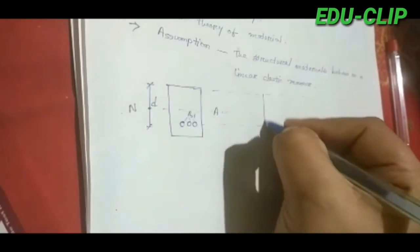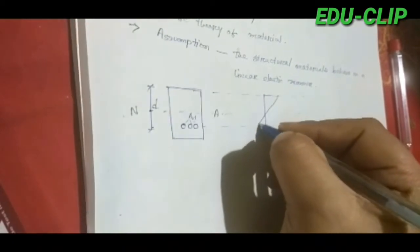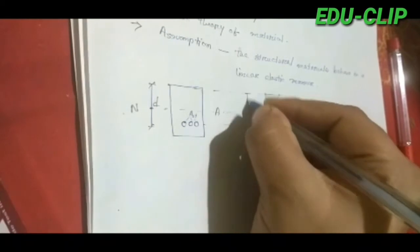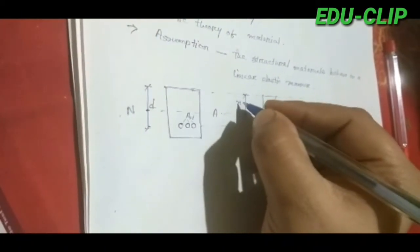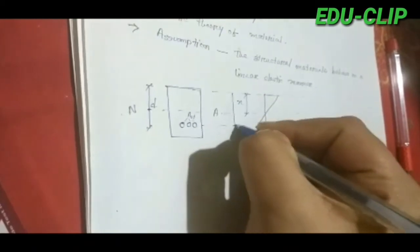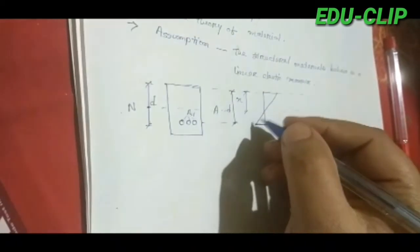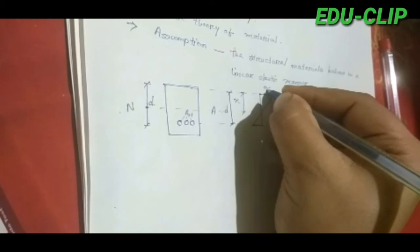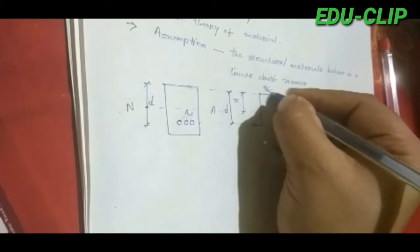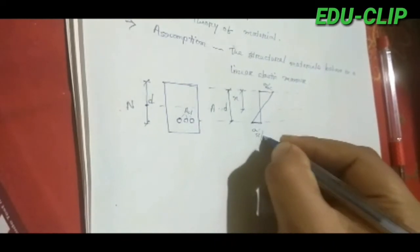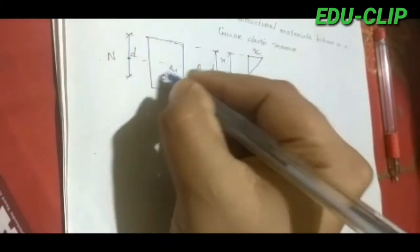If we draw the stress diagram of this concrete section, the stress diagram is linear. This depth is n, that is the neutral axis depth. This is the effective depth, and at the extreme fiber on the compression side, the stress in concrete is sigma_cbc.